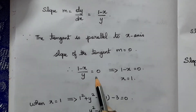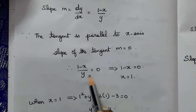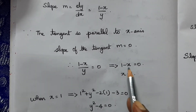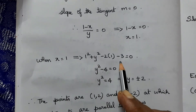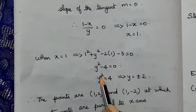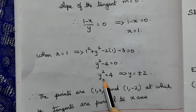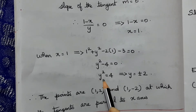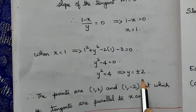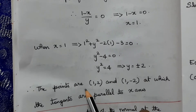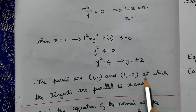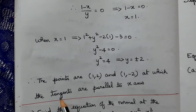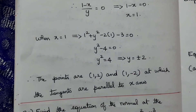For tangent parallel to x-axis, dy/dx = 0, which gives (1 - x)/y = 0, so x = 1. Substituting x = 1 into the curve: 1 + y² - 2 - 3 = 0, giving y² = 4, so y = ±2. The points are (1, 2) and (1, -2).